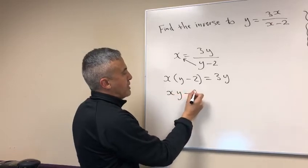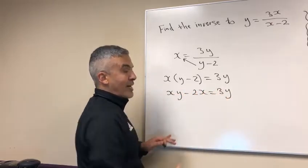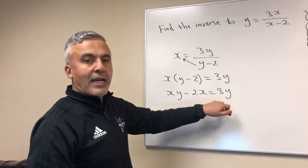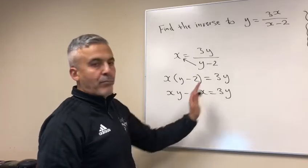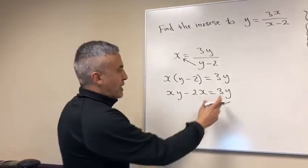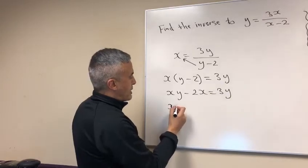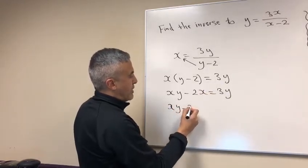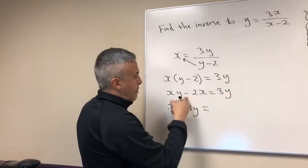So at this stage you want to bring everything that has a y to one side and anything that doesn't have a y bring it to the other side. So I'm gonna bring the 3y to this side. You know it's positive here so it's gonna change to minus 3y. And you move the negative 2x to this side. That's minus, it becomes plus 2x, so positive 2x.